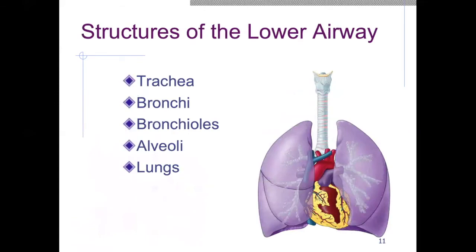Our trachea comes down and divides into our bronchi, then divides further into smaller bronchi, and ultimately into our bronchioles, which you cannot see on this picture, and also into the alveoli — also not pictured here. All of this is contained within the lungs.